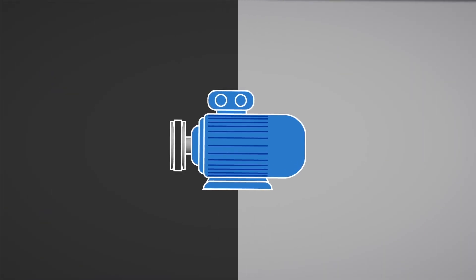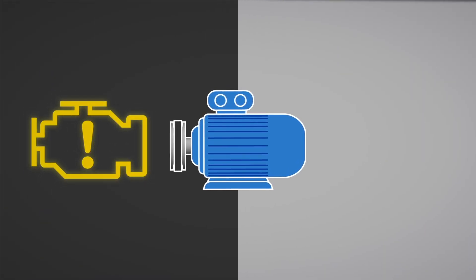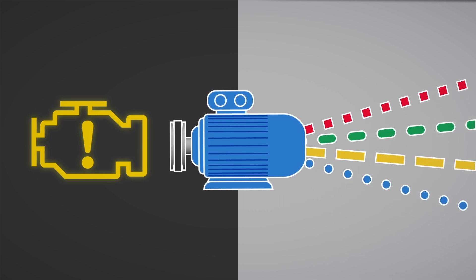Banner's vibration monitoring solutions range from a simple check engine light of critical vibration parameters, to collecting data on a variety of vibration characteristics so that an even more in-depth analysis can be performed on the machines being monitored.